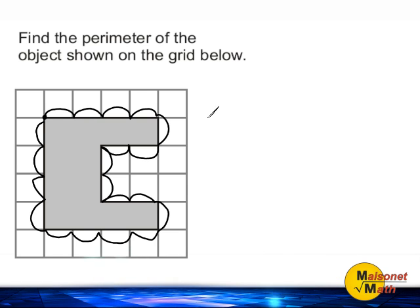So, just by using the grid located on the outside of this shape, we can just count by ones all the way around and we would say the perimeter of this object is equal to 20 units.